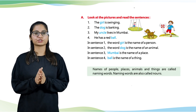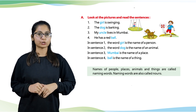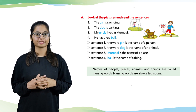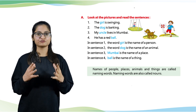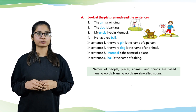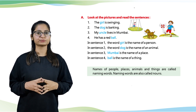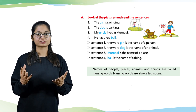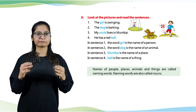Okay students, let's do part A. Look at the pictures and read the sentences. The girl is swinging. The dog is barking. My uncle lives in Mumbai. He has a red ball. In sentence 1, the word 'girl' is the name of a person. In sentence 2, the word 'dog' is the name of an animal. In sentence 3, 'Mumbai' is the name of a place. In sentence 4, 'ball' is the name of a thing.